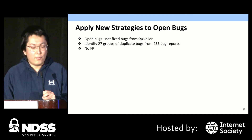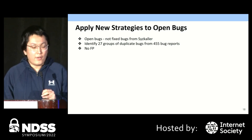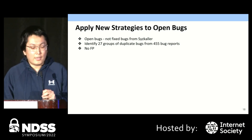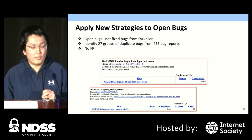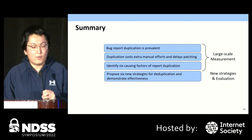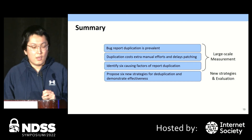This evaluation confirms the effectiveness of our strategies. We applied them to real-world open bugs to catch previously unknown duplication. We identified 27 groups of duplicate bugs from 455 bug reports. We manually analyzed these groups and found there are no false positives. We reported our results to the community and received recognition from them.